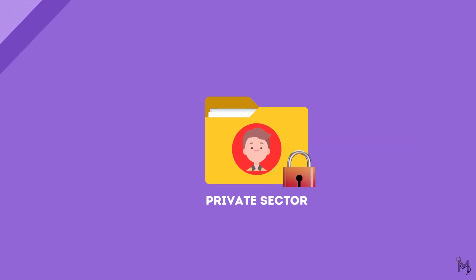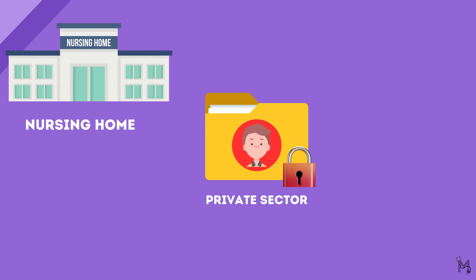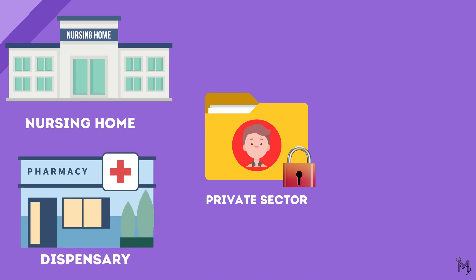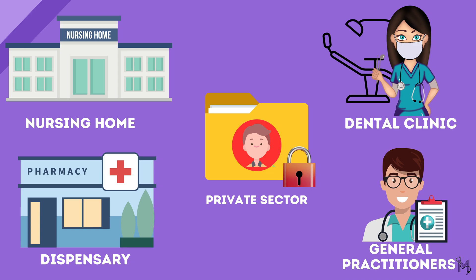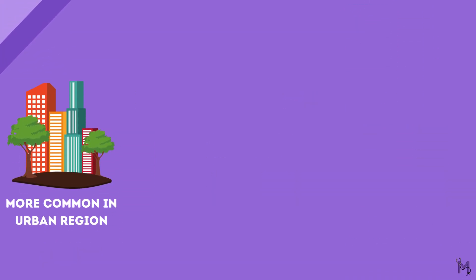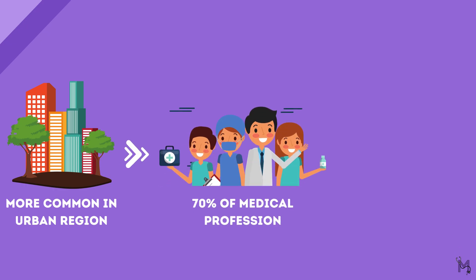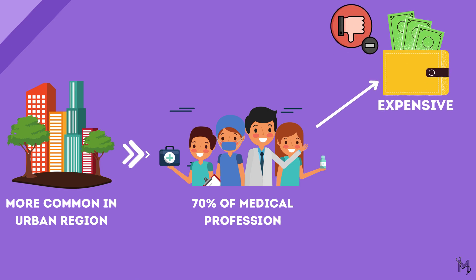After the public sector, we have the private sector. It can be either in the form of nursing homes, dispensaries, or private practices like setting up your own dental clinic or hospitals. We can also have general practitioners included under this category. These are more common in the urban region and hence constitute about 70% of the medical profession. The main drawback of this sector is that treatment is very expensive and hence is only available to those who can pay for it.